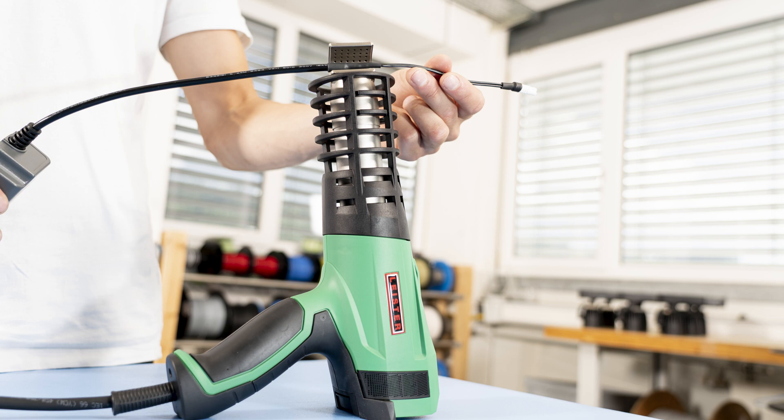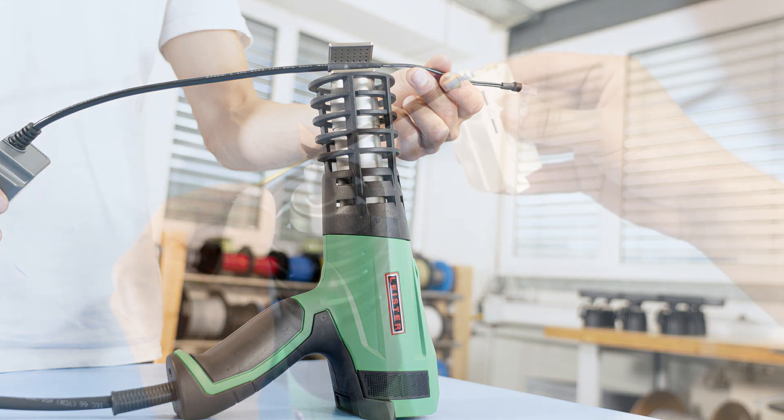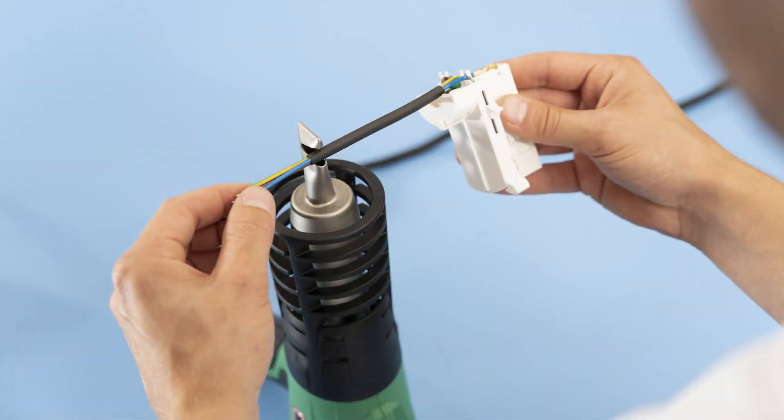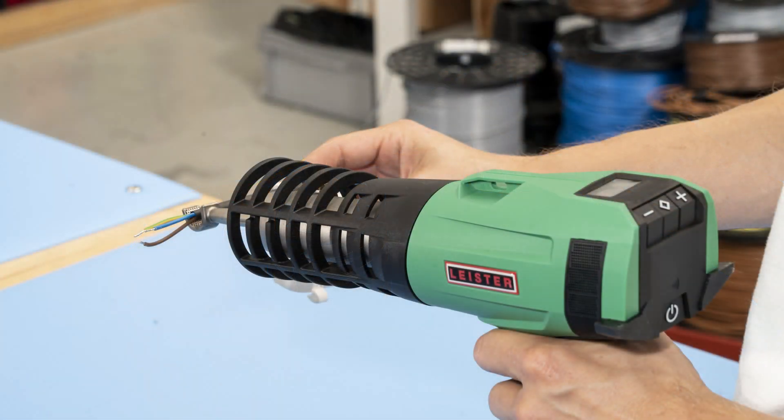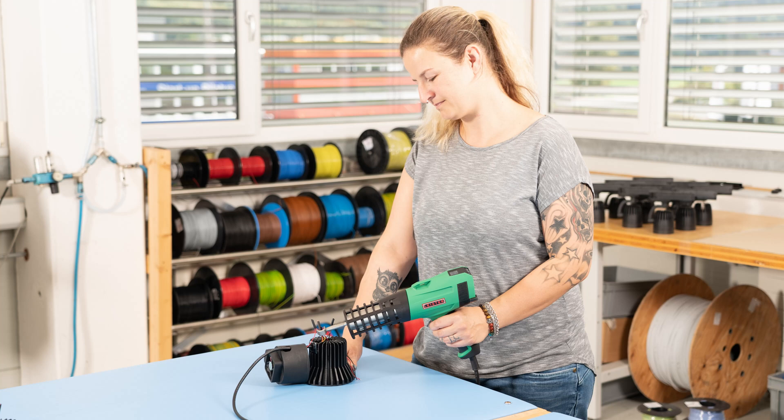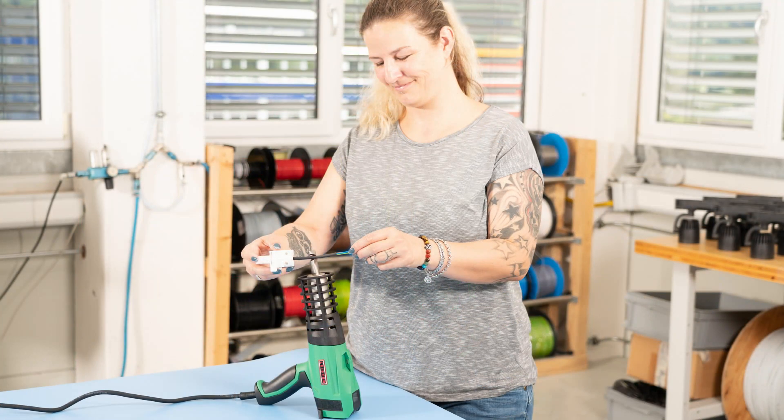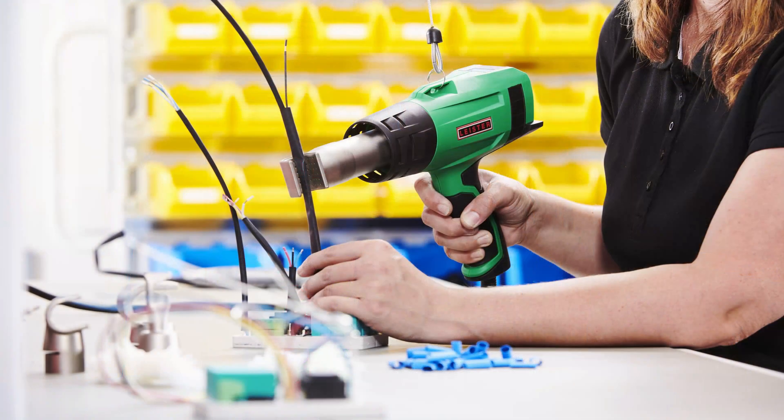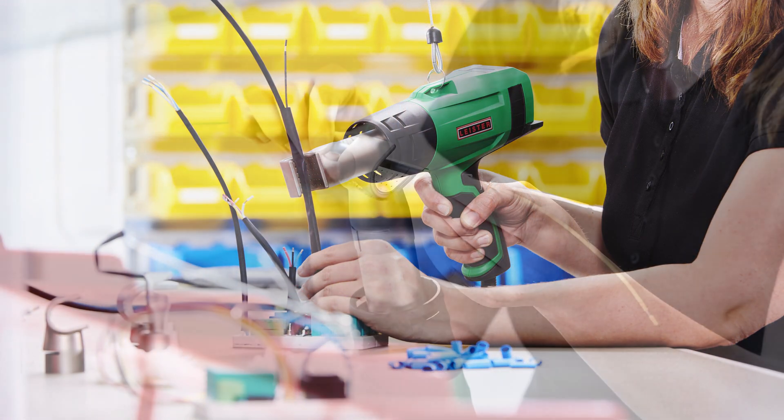For various shrinking applications in the electronics industry, for example, a defined working range might be an important factor. Furthermore, thin-walled shrink tubes used in a variety of catheters and other medical equipment are usually temperature sensitive. Thus, they are ideally processed at a fixed temperature.